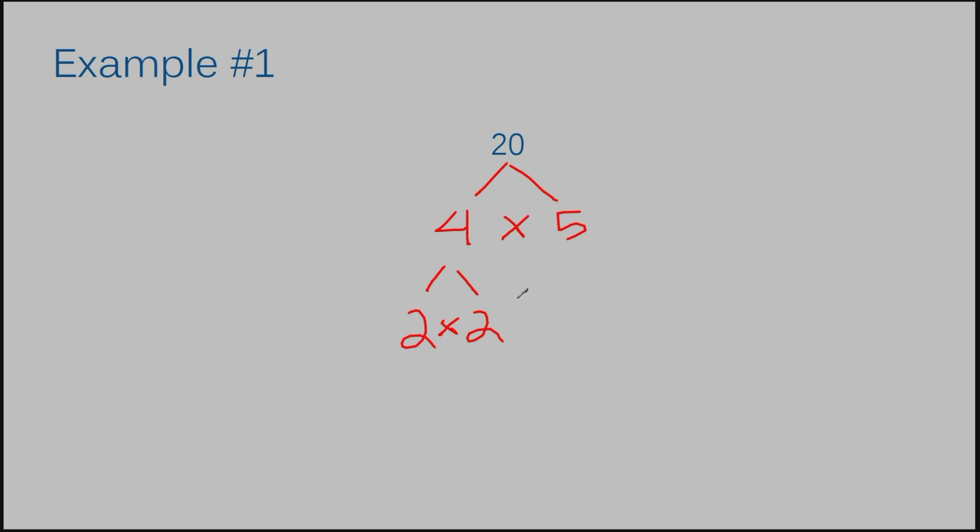The 2 cannot be broken down and the 5 cannot be broken down because they are prime. Meaning the only two numbers that you can multiply together to get those numbers are 1 and itself. Only 1 times 2 gives you 2. Only 1 times 5 gives you 5. So you can't break those down anymore. Once I get to a prime number, I prefer to circle my number to let me know that that section of the tree has ended. Like I can't branch off anymore on that tree.